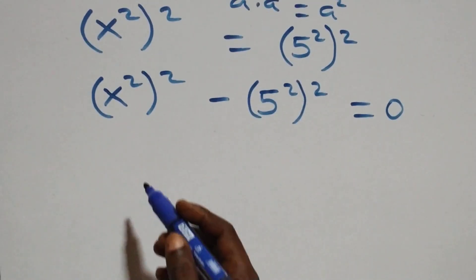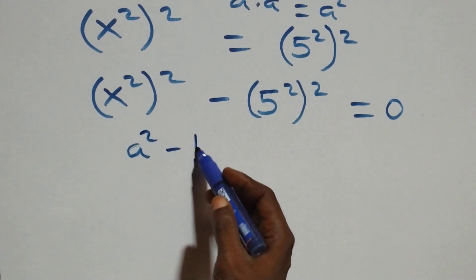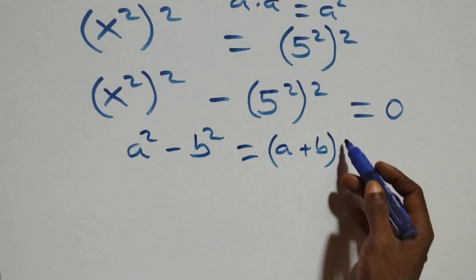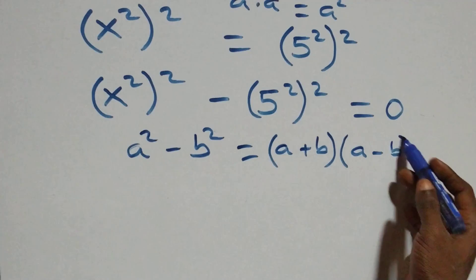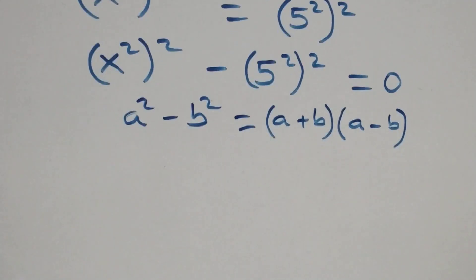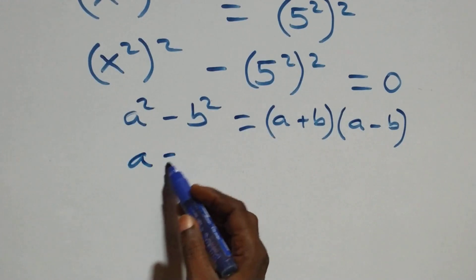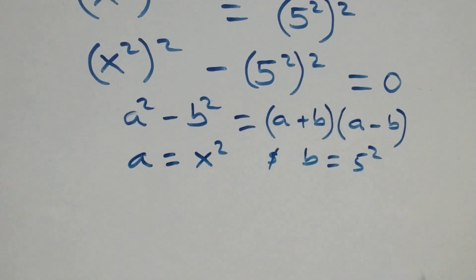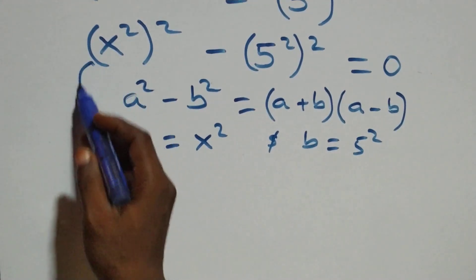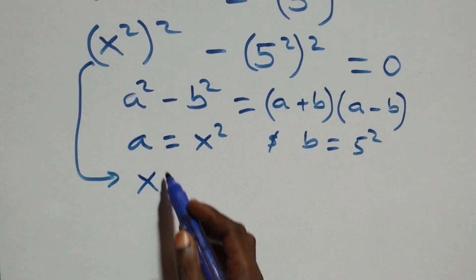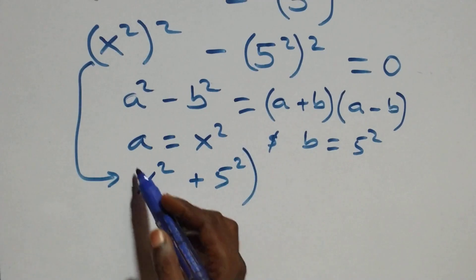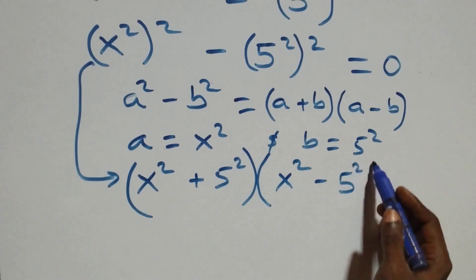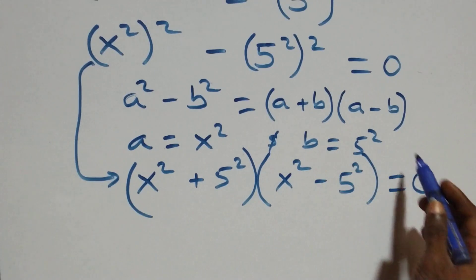From here, we apply difference of two squares: when we have a squared minus b squared, it's the same thing as (a + b)(a − b). Here, a is standing as x squared and b is standing as 5 squared. So this becomes (x squared + 5 squared)(x squared − 5 squared) equals to 0.